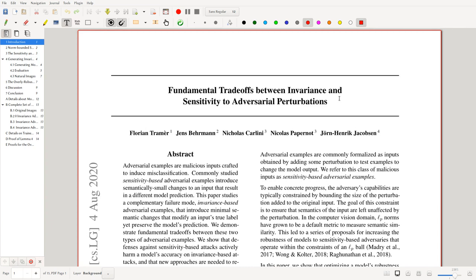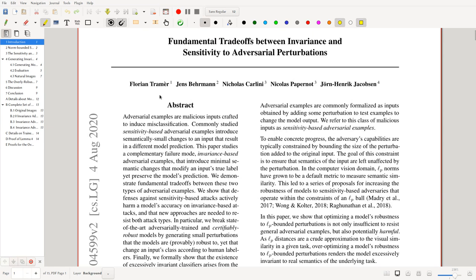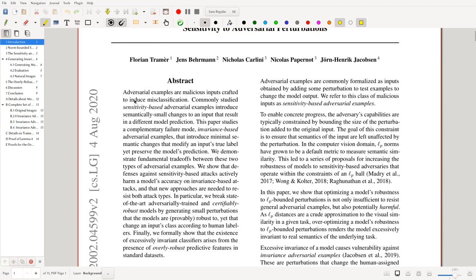This is an ICML 2020 paper by Florin Trammer, Jens Behrmann, Nicholas Carlini, Nicolas Papernot, and Jorn-Henrik Jacobsen. This paper is quite interesting because it's addressing a problem which is usually overlooked: we can be very robust to certain kinds of adversarial examples, but then we have shortcomings in the other ones necessarily. Adversarial examples are malicious inputs crafted to induce misclassification.